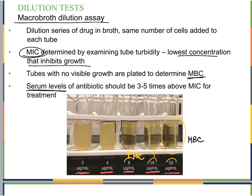Serum levels of an antibiotic — meaning the concentration in the bloodstream — should be three to five times above the MIC for effective treatment. In a hospital setting, the patient's blood is tested to monitor the antimicrobial level and ensure it is maintained at three to five times the MIC throughout treatment.